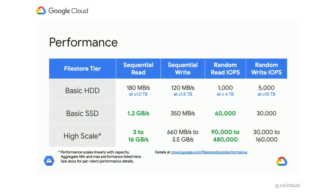We didn't just make FileStore fast — we also made it simple to reason about the price and the performance that you get. FileStore Basic is a scale-up architecture, while FileStore High Scale is a scale-out architecture. What this means is that High Scale performance scales linearly with capacity, and it can handle an enormous number of clients. With all of our FileStore tiers, you just pick a tier and a size at creation time so that you know immediately what your performance characteristics are. And since we don't charge per-operation fees, you also know immediately what your spend will be. We even show you an estimate in the console.